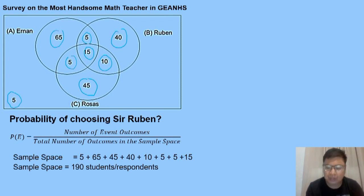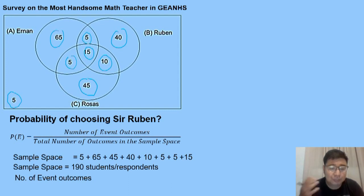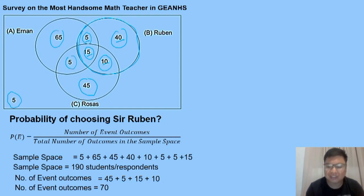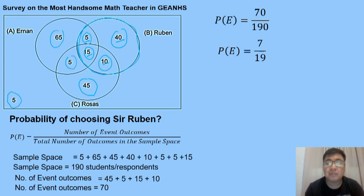Now let's find the number of event outcomes. The first question: what is the probability of choosing Sir Ruben? We take all numbers inside Sir Ruben's circle: 40 plus 5 plus 15 plus 10, which equals 70. Substituting into the formula: probability equals 70 over 190, lowest term is 7 over 19. As a decimal that is 0.3684, or 36.84%.